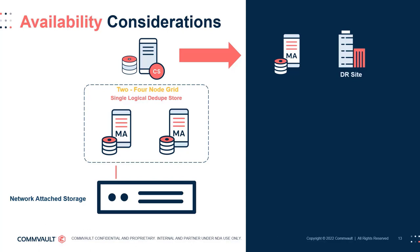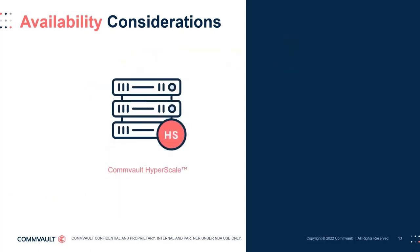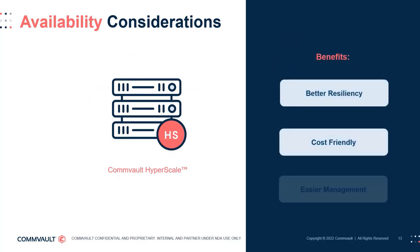When having availability-type discussions, keep in mind Commvault Hyperscale technology. Hyperscale was designed specifically to provide improved resiliency of the media agent and storage components with lower costs and simplified management compared to traditional compute and storage architectures.